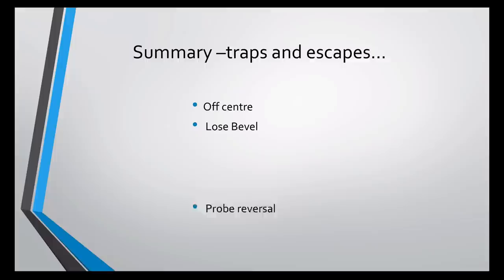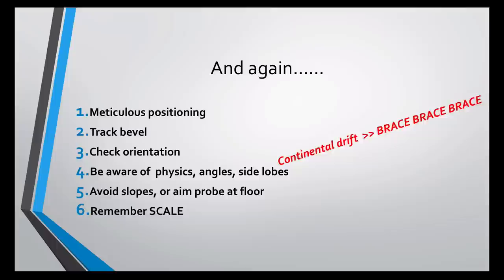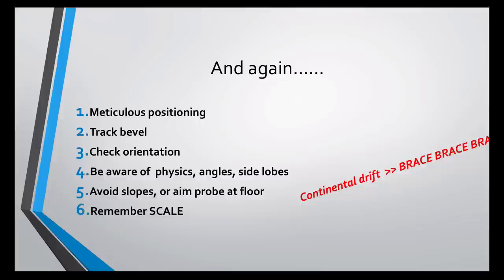In summary, the ways things can go wrong: you may be off centre; you may lose contact with the tip of your needle; you may have the probe reversed; you may have to battle with side lobes, the angle of incidence, and artefacts; if you're scanning on a slope you're in for trouble; and don't forget that what you see on the screen is often a lot bigger than what's happening in reality. To recap: minimise your risk of error with meticulous planning and positioning, always keep contact with the tip of your needle, check your orientation, have some understanding of physics, avoid slopes if possible and if you can't then aim your probe at the floor — and remember scale.